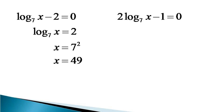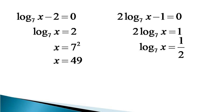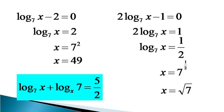The value of x comes out to be equal to 49. Considering the second equation, we get 2 log x to the base 7 equals 1, or log x to the base 7 equals 1 by 2. Again from the definition of log, x is equal to 7 raised to the power 1 by 2, or simply x equals root 7. It can be verified that both values — x equals 49 and x equals root 7 — satisfy the given equation, and hence both are solutions. Thanks for watching.